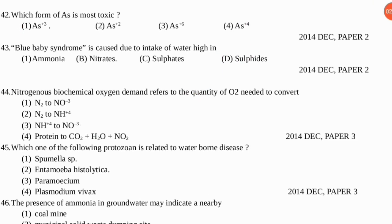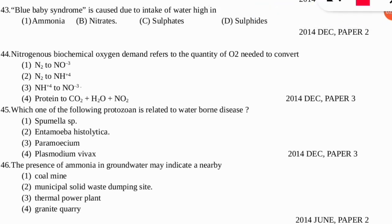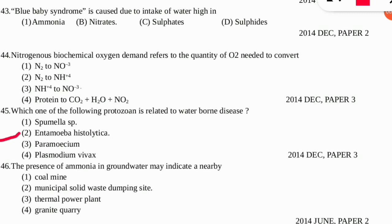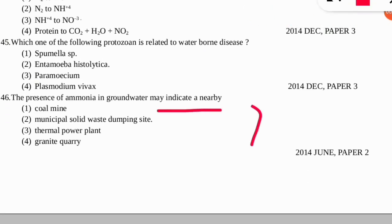Question 44: nitrogenous biochemical oxygen demand refers to the quantity of oxygen needed to convert which of the following? The correct option is number three — ammonia to nitrate. Question 45: which protozoan is related to waterborne disease? The correct option is number two — Entamoeba histolytica, which causes amoebiasis (amoebic dysentery), a waterborne disease. Question 46: the presence of ammonia in groundwater may indicate a nearby what? The correct option is number two — a nearby municipal solid waste dumping site.